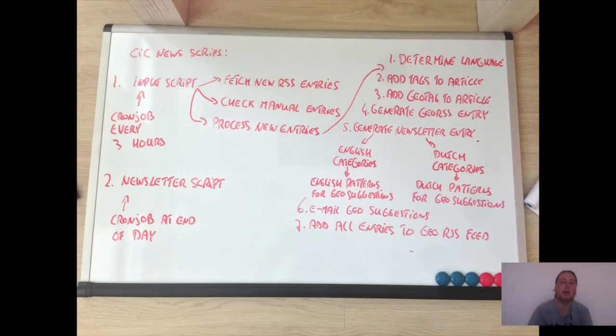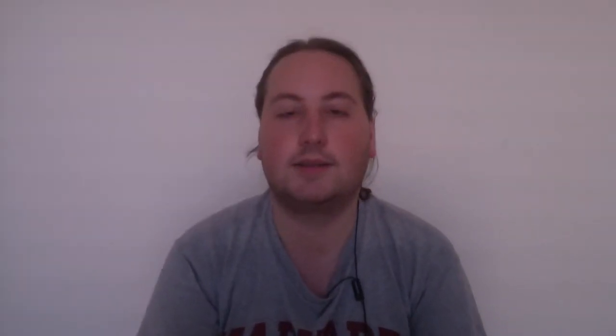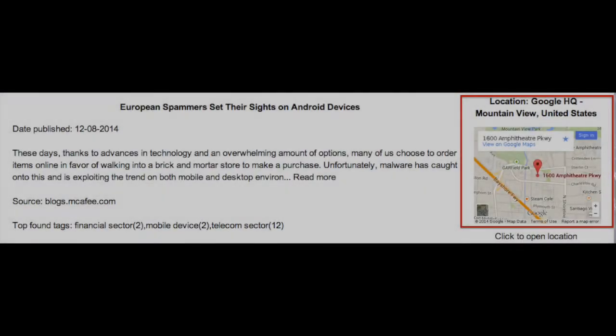The processing script does the following things. First, it determines the language of an article — at this point, only whether it's Dutch or English. Second, it scans the article's contents to determine which tags belong to that article. So if an article is about malware, it gets the tags of cybercrime and malware.